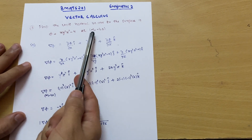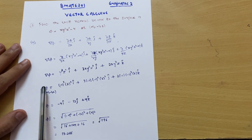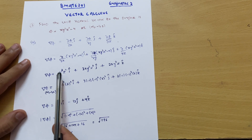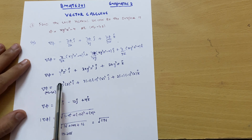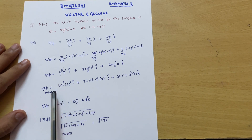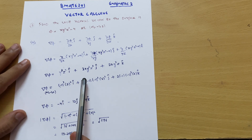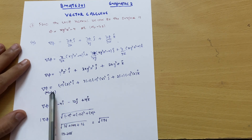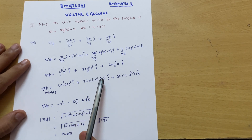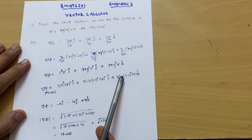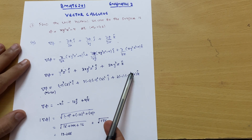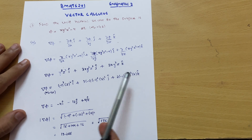Now, del phi at the point (−1, −1, 2): we substitute x = −1, y = −1, z = 2. So we get: (−1)³ · (2²) i-cap, plus 3 · (−1) · (−1)² · (2²) j-cap, plus 2 · (−1) · (−1)³ · 2 k-cap.